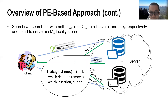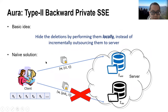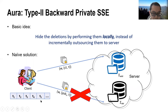To achieve a higher level of backward privacy, our basic idea is to make the deletions oblivious to the server by performing them locally instead of incrementally outsourcing them to the server. A naive solution runs the previous approach in the following way: the insertion process is the same as before, but for deletions, the client records the associated tags locally.